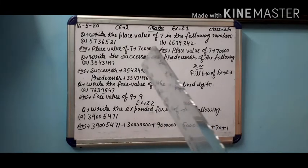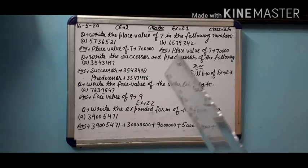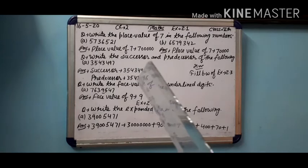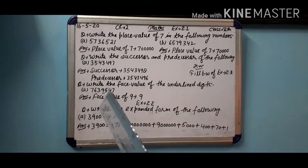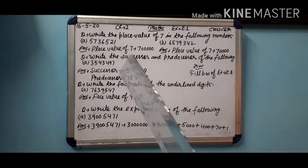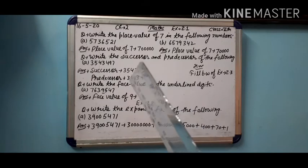You can calculate it roughly also. For predecessor we write minus one. So write the beginning numbers 35434, then 97 - what comes before 97? 96. So we did minus one in predecessor. You can calculate it roughly as well.